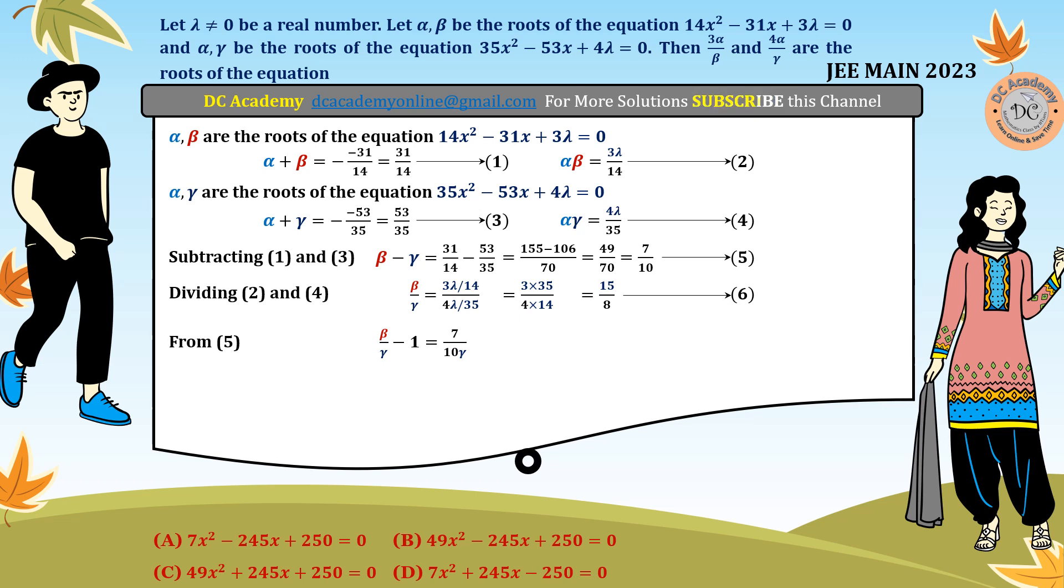From equation 6, we know β/γ = 15/8. Therefore, 15/8 - 1 = 7/(10γ). Calculating the left-hand side and doing cross multiplication, we find that γ = 4/5.